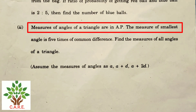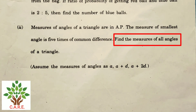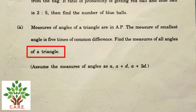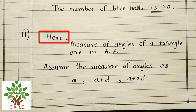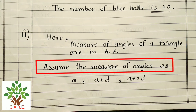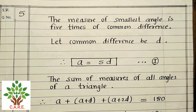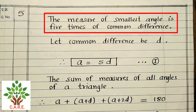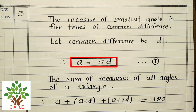Question 2: Measures of angles of a triangle are in AP. The measure of the smallest angle is 5 times the common difference. Find the measures of all angles. Assume angles as a, a+d, a+2d. Let common difference be d. Therefore a = 5d. (Equation 1)